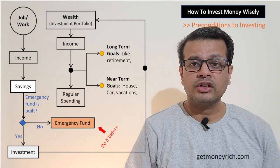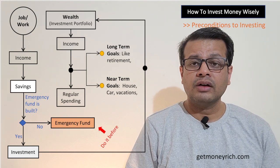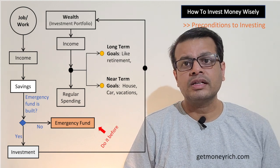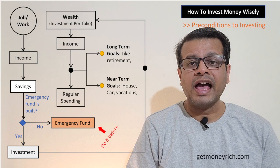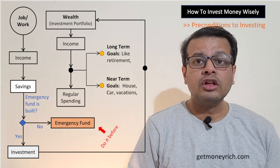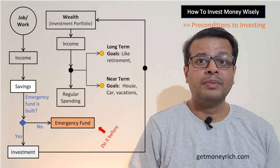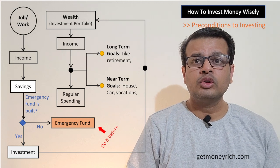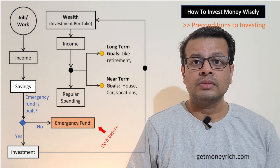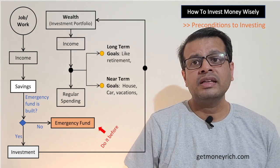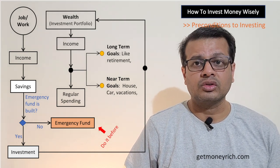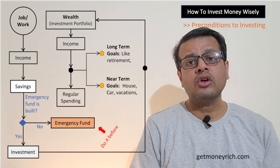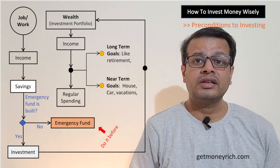The second precondition is you must be sufficiently insured. First, buy a health insurance policy — the cover should be at least 50 percent of your annual income. If your annual income is 30 lakh rupees, you should have a health cover of at least 15 lakh rupees. You should also buy a life insurance policy — preferably a term insurance plan, not an endowment plan. The life cover should be at least 10 times your annual income, so if your annual income is 30 lakhs, you should have a life cover of 3 crores.